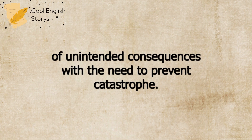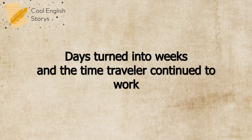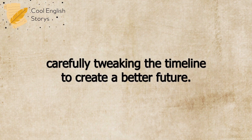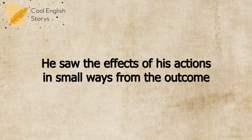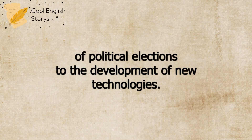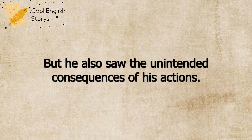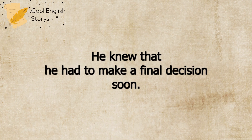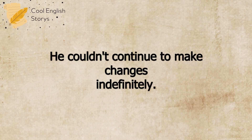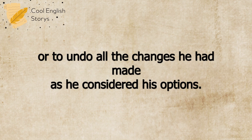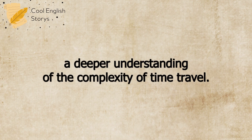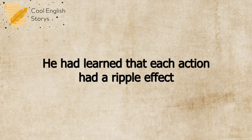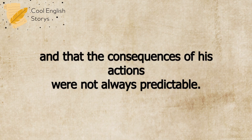He had to balance the risk of unintended consequences with the need to prevent catastrophe. Days turned into weeks, and the Time Traveler continued to work, carefully tweaking the timeline to create a better future. He saw the effects of his actions in small ways, from the outcome of political elections to the development of new technologies. But he also saw the unintended consequences of his actions. He encountered people who had never existed before, and saw places that had never been built. He knew that he had to make a final decision soon — he couldn't continue to make changes indefinitely. He had to decide whether to leave the timeline as it was, or to undo all the changes he had made. As he considered his options, he realized that he had developed a deeper understanding of the complexity of time travel. He had learned that each action had a ripple effect, and that the consequences of his actions were not always predictable.